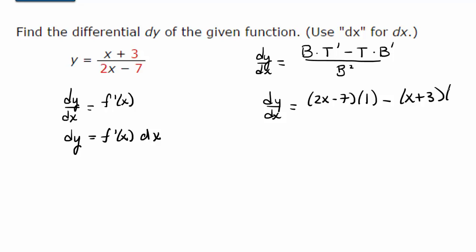times the derivative of the bottom. The derivative of 2x is 2 and the derivative of negative 7 is 0. So it's just 2 over the bottom squared, 2x minus 7 squared.